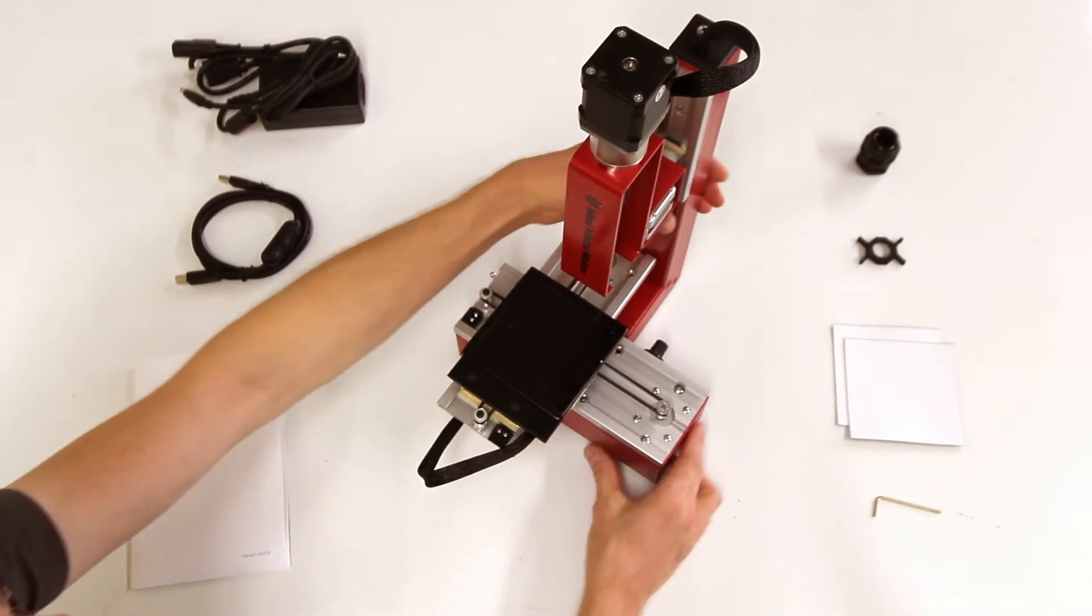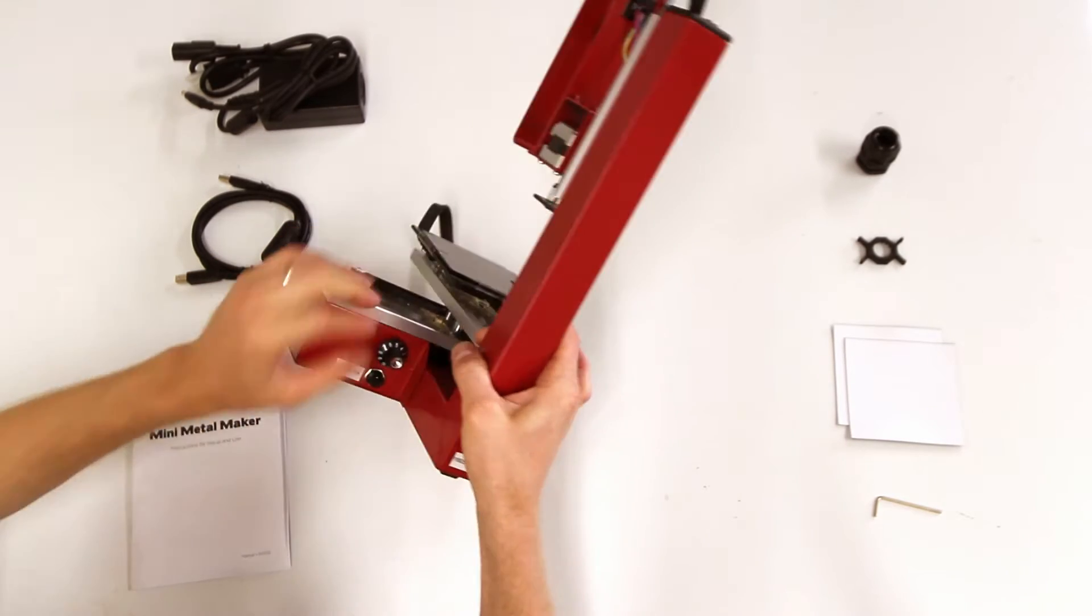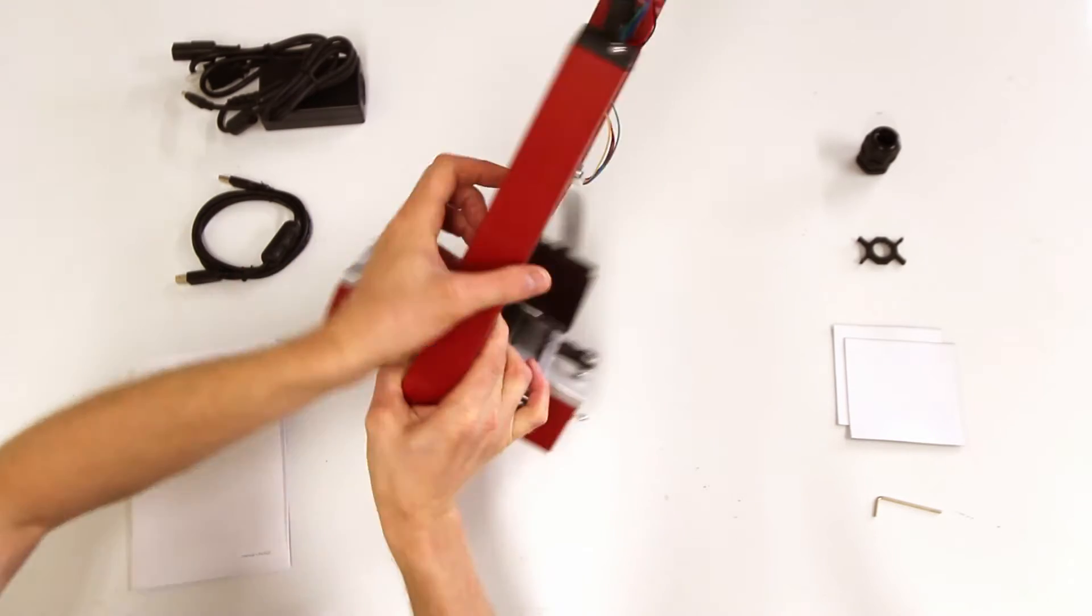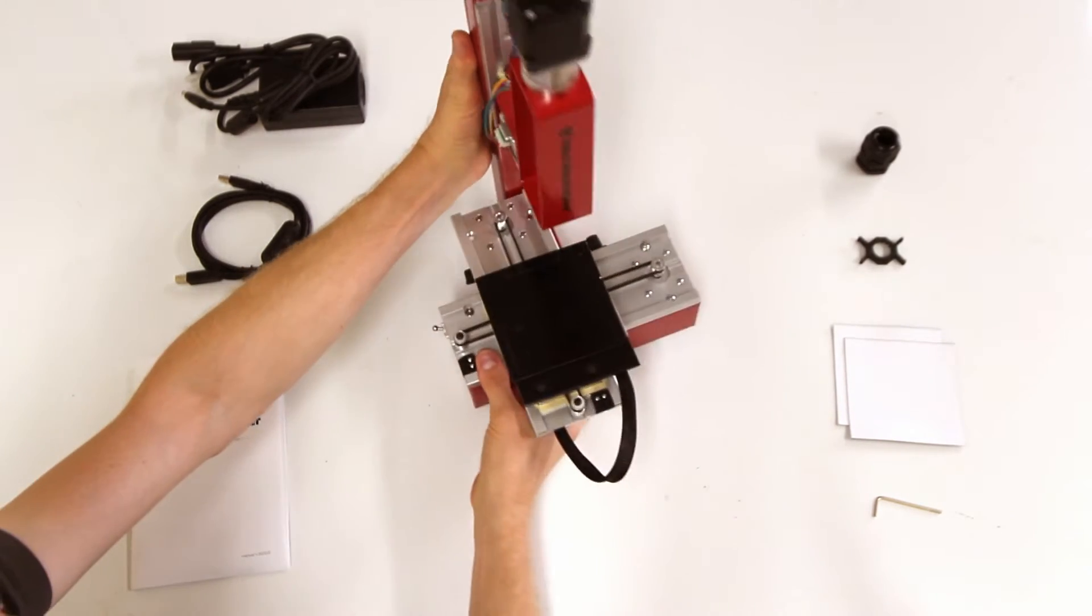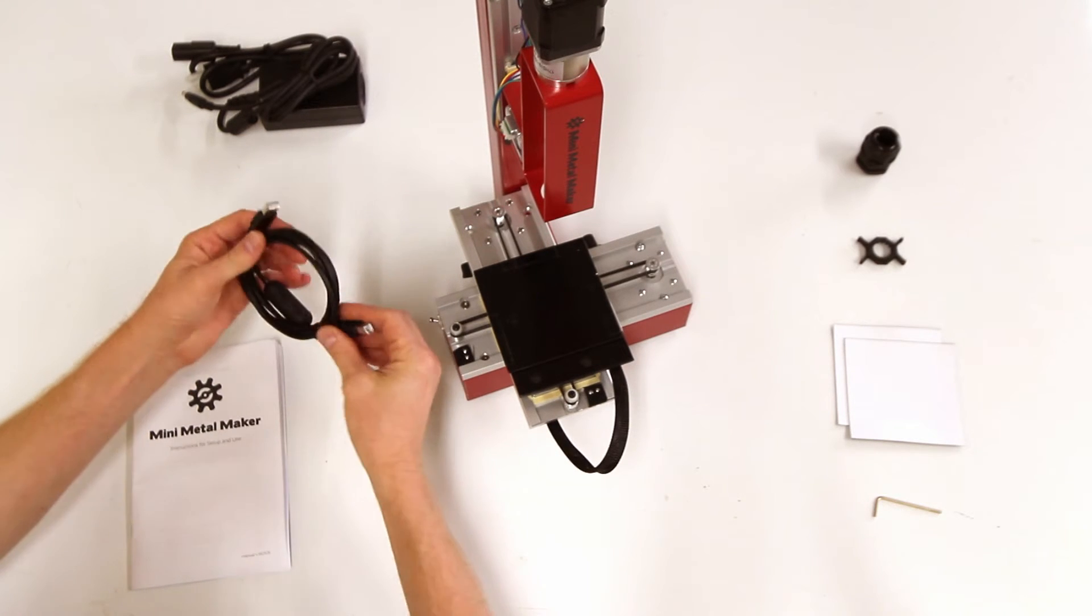When you go to connect it to your Mini Metal Maker, it plugs right into the back right here. There's a power-in input. The next thing that you can look for is a USB cable.